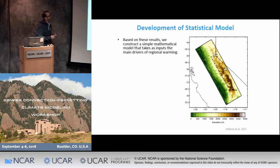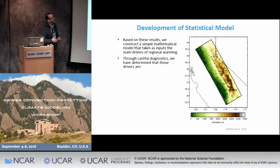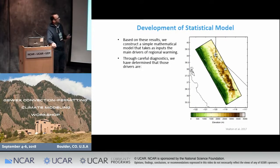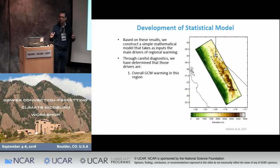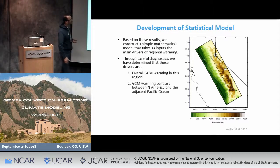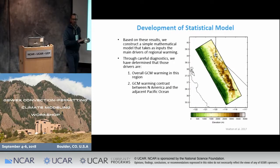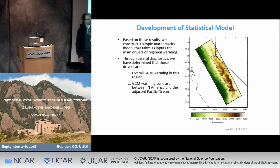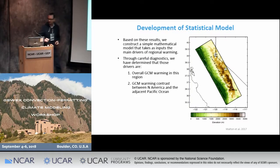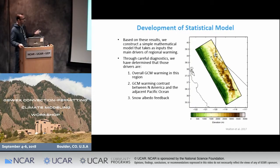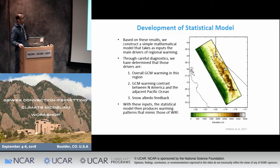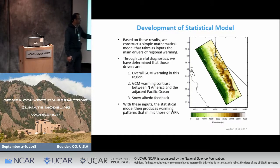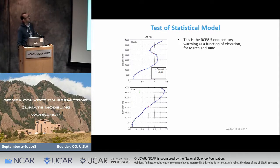Based on these results, we construct a very simple mathematical model that takes as inputs the main drivers of regional warming. Through diagnostics, we've determined the main drivers are: the overall GCM warming in the region, the contrast in warming between North America and the adjacent Pacific Ocean (GCMs typically give more warming over continents than over the ocean, and the Sierra Nevada serves as a big barrier between continental and marine air masses), and finally, snow albedo feedback. With these inputs, we build an emulator that produces warming patterns mimicking those of WRF.